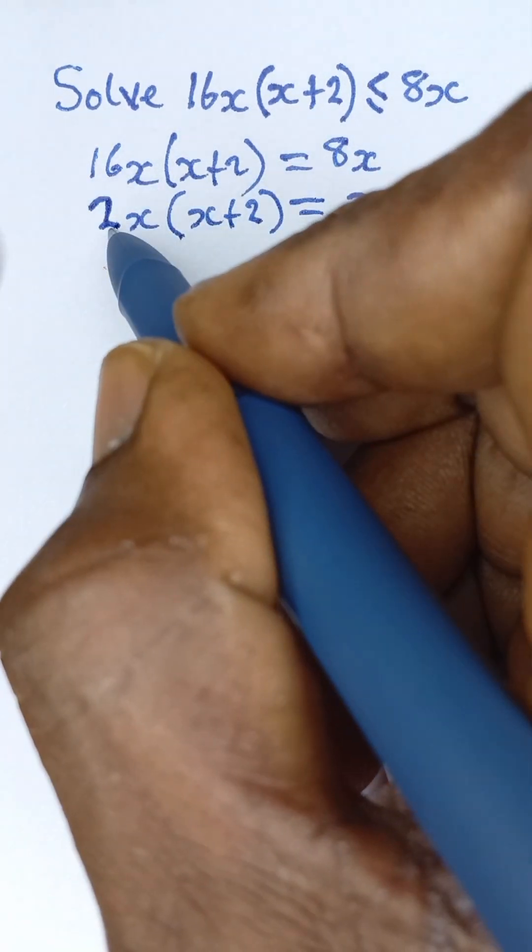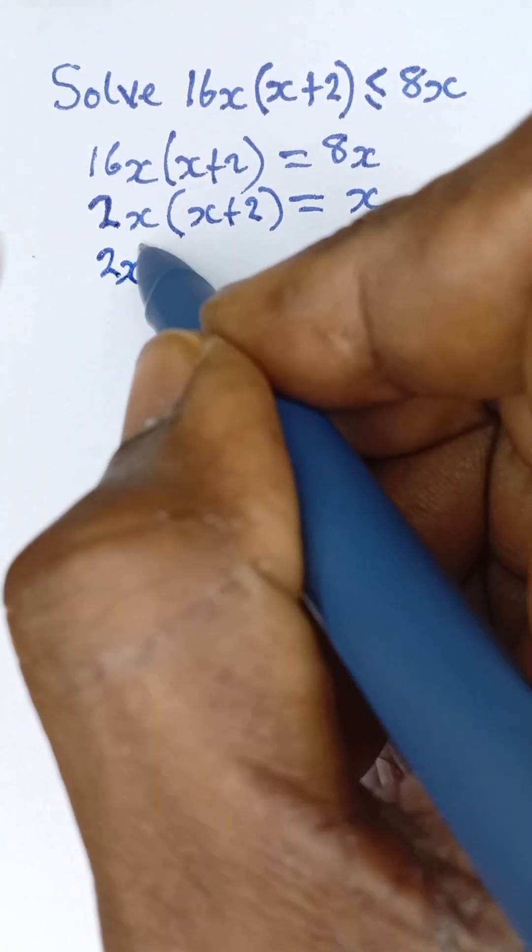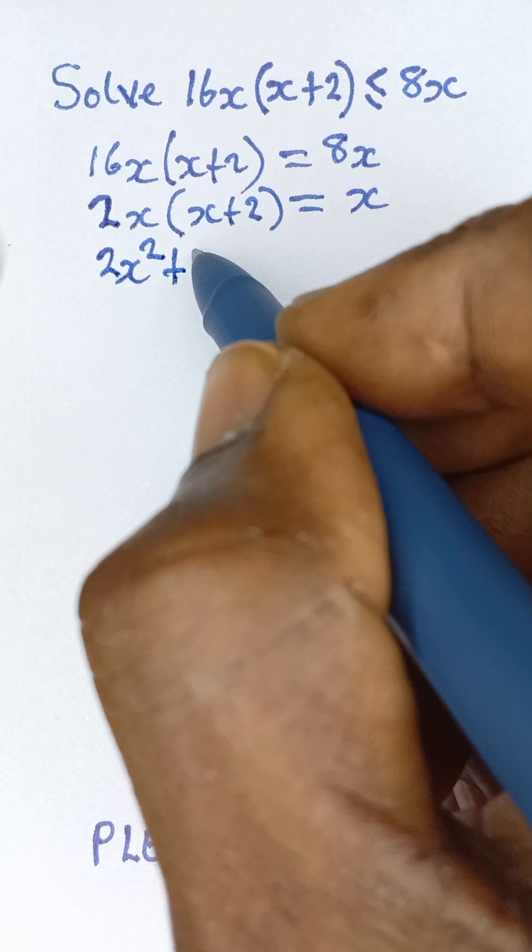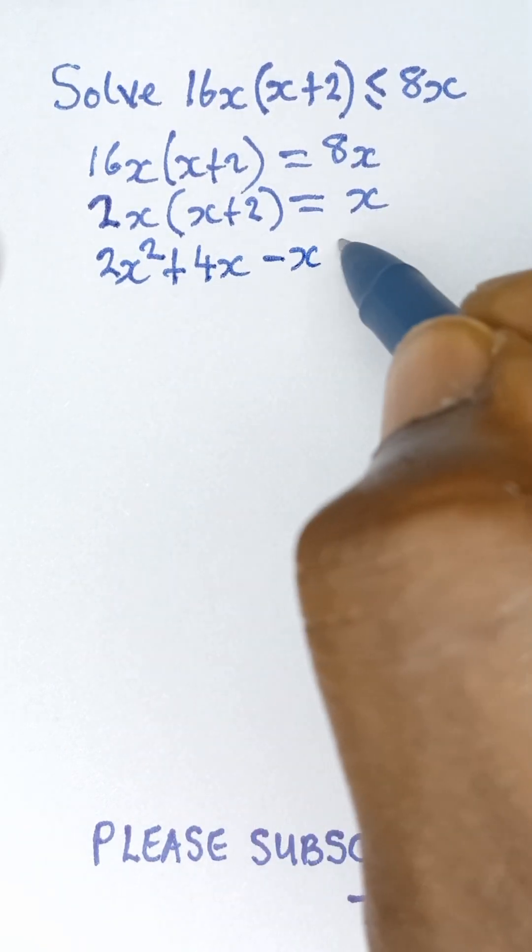Now if I expand this bracket it gives me 2x² + 4x, and then when this x comes to this side it becomes -x = 0.